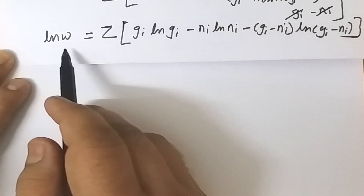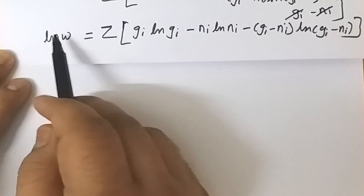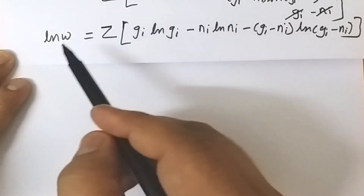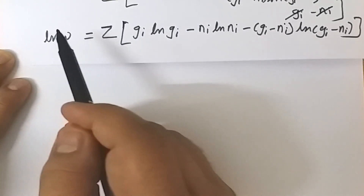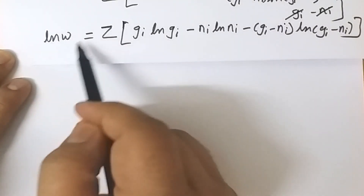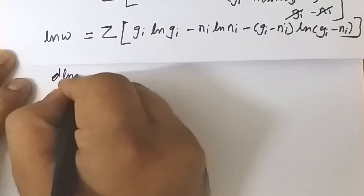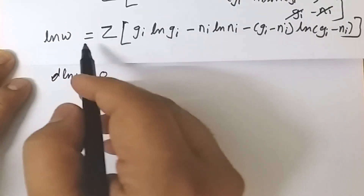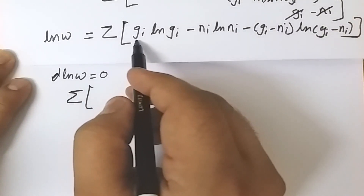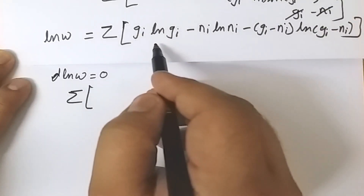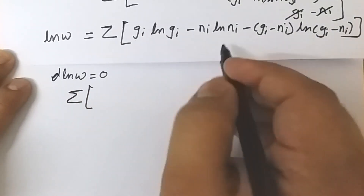For the most probable distribution, the thermodynamic probability W is at its maximum and constant, so d(ln W) = 0. We differentiate the expression. Since Gi is a constant, its differentiation is zero and we drop that term. We then differentiate the remaining terms with respect to Ni.